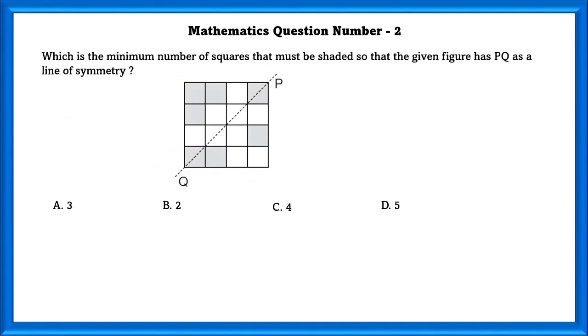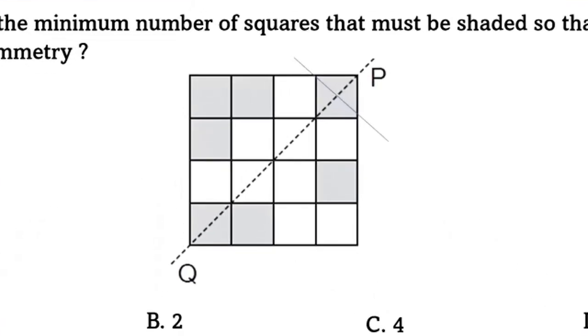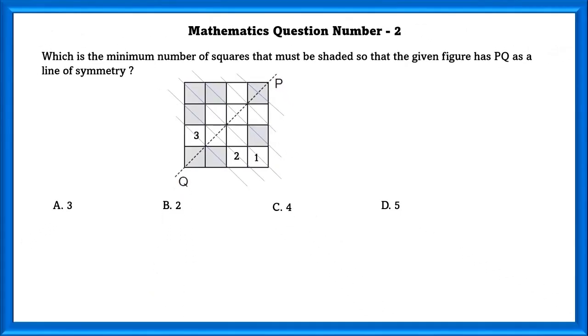Mathematics Question Number 2: Which is the minimum number of squares that must be shaded so that the given figure has PQ as a line of symmetry? This part is symmetrical. This part is also symmetrical. This part is symmetrical. If we shade square 1, we will get this part as symmetrical. If we shade square 2, we can get this part as symmetrical. If we shade square 3, then this part would be symmetrical. So there are 3 minimum number of squares that must be shaded so that the given figure has a line of symmetry.